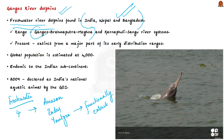The Gangetic river dolphin is present in the Ganges, Brahmaputra, Meghna river systems and also in the Karnafuli and Sangu river systems across Nepal, India, and Bangladesh. However, the species is extinct from a major part of its early distribution range. The global population is estimated at only 4,000 individuals, of which 80% are within Indian territory. Because of this, the species is considered endemic to the Indian subcontinent, and in 2009 it was declared India's national aquatic animal by the Government of India.